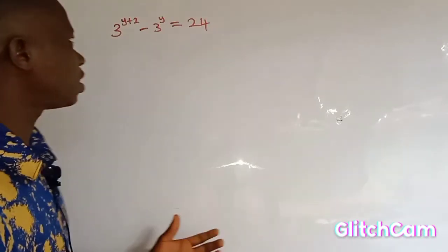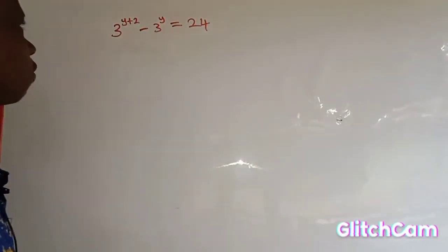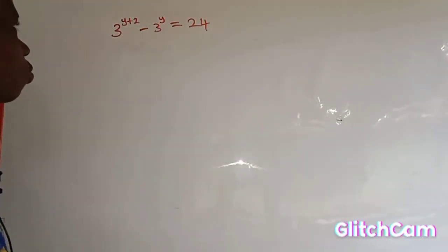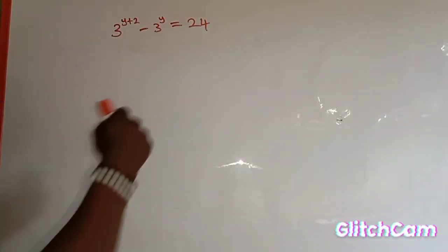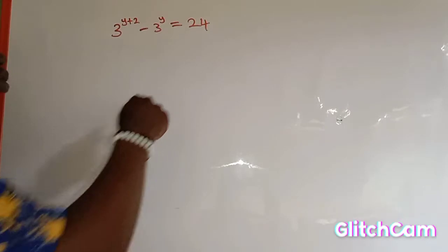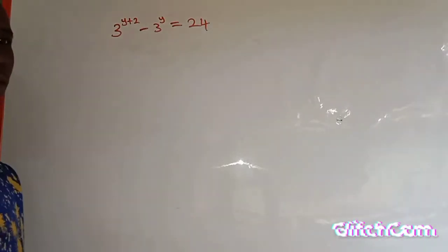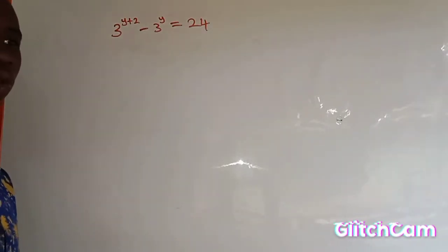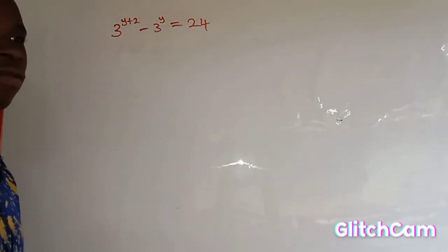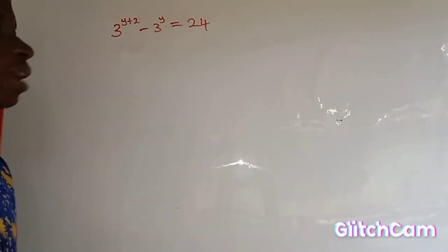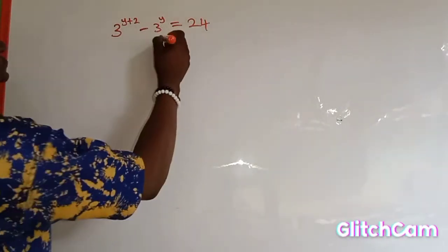The question on the board says: 3 to the power of y plus 2, minus 3 to the power of y, is equal to 24. We are asked to find the value of y.